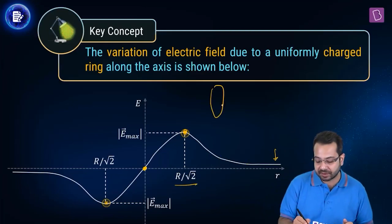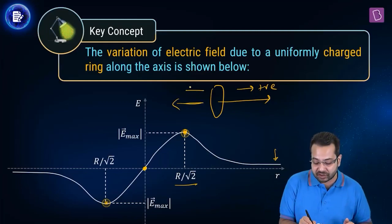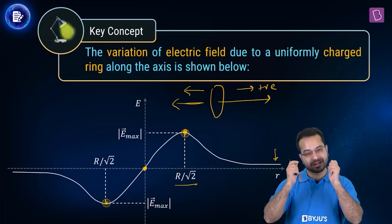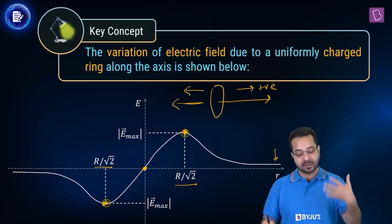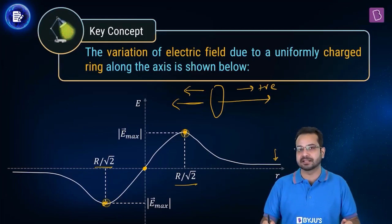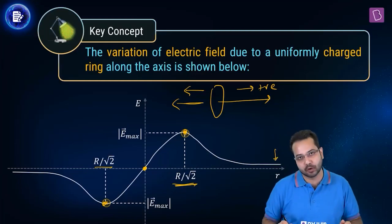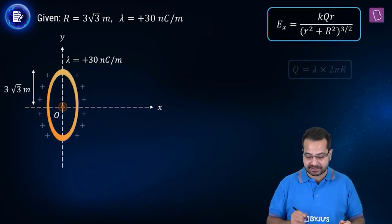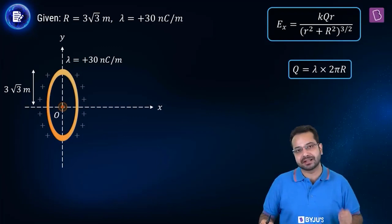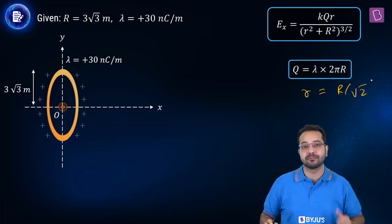On the opposite side the magnitude variation is identical but the direction reverses. The maximum electric field is obtained at r = R/√2. Using E = KQr/(R² + r²)^(3/2) with Q = λ × 2πR and substituting r = R/√2, the denominator becomes (R²/2 + R²)^(3/2) = (3R²/2)^(3/2). The numerator includes K × λ × 2πR × R/√2.